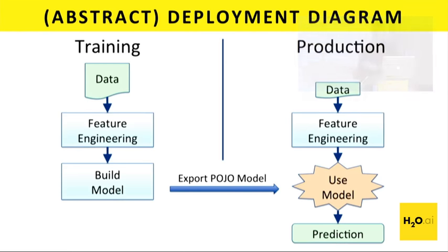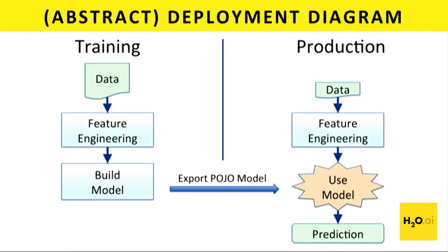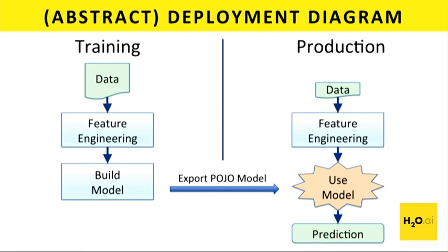Here's an abstract deployment diagram. The left-hand side is the training side, the right-hand side is the production side. The feature engineering steps are common to both. The training data could be larger; on the production side, data is being processed in real time. You can see the handoff of the POJO model from training to production, with the right-hand production side all running in AWS Lambda, and an application wrapping around it — sending data in and getting predictions back.